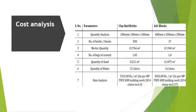Quantity of sand required: 0.221 m³ for clay bricks and 0.1075 m³ for AAC blocks. Water required: 31 liters for clay bricks and 16 liters for AAC blocks. Rate analysis: clay bricks cost ₹5,252 per m² and AAC blocks cost ₹5,052 per m², both as per MPPWD SOR Building Work 2014.